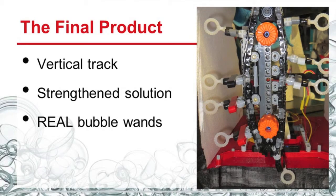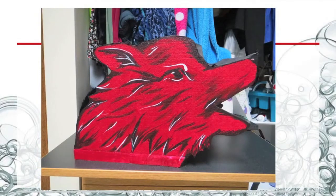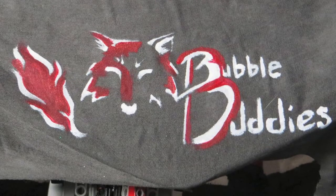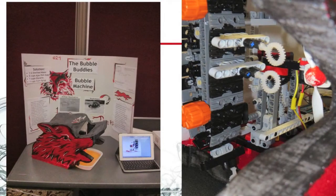Finally we just moved on to store-bought bubble wands, making life much easier. After completing the engineering design cycle, we arrived at this final product — a vertical track, a strengthened solution, and real bubble wands — to make a better bubble machine and make it more entertaining for children by implementing art, pictured in the next slide. At FED we did very well. We came in second place overall for both the morning and afternoon sessions, and throughout the whole day we ran our machine for over an hour with varying bubble speeds and no failures whatsoever.